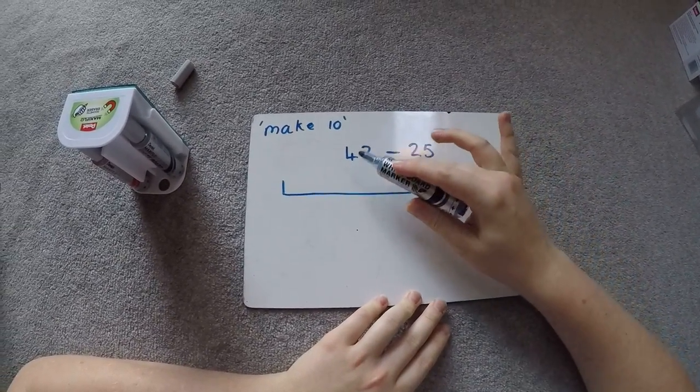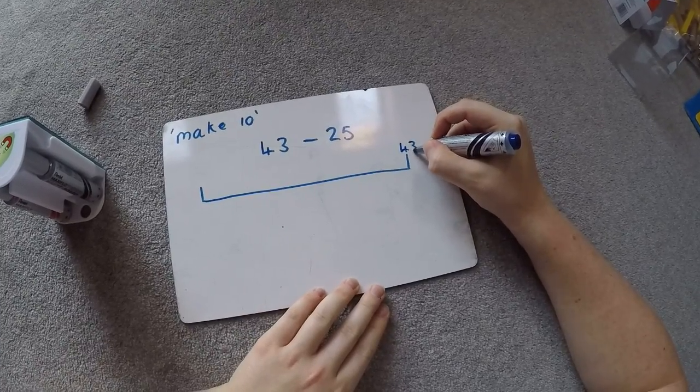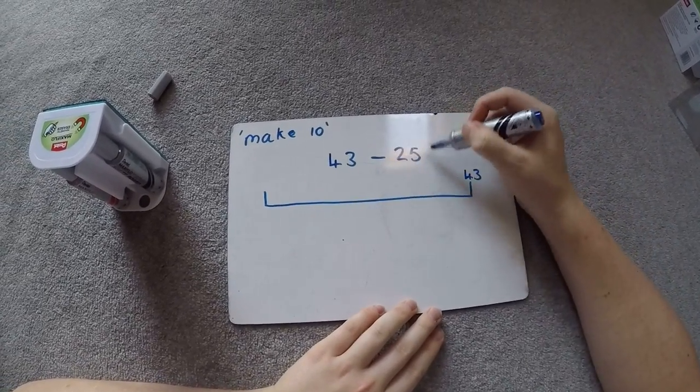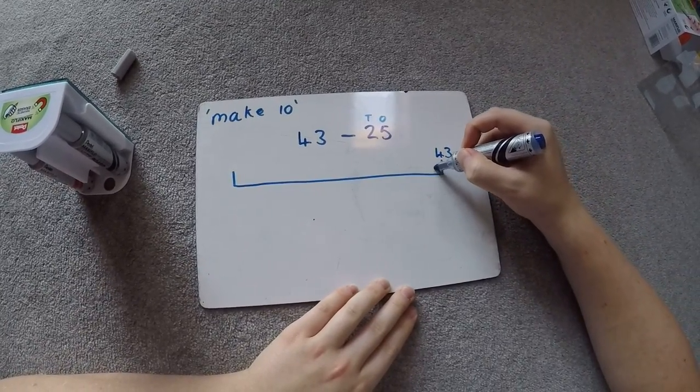So we've got something to work with. My 43, being subtraction, is going to go at this end. Now 25 we know has two tens and five ones, so I'm going to do my jumps of 10 first.